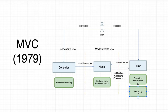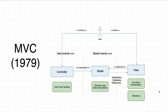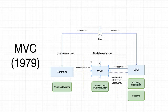MVC was a design pattern to solve the user interaction with the user interface problem. The advice at the time was that every view on screen would have a specific controller and a specific model — so a button on screen would have a button controller, a checkbox would have a checkbox controller. The entire user interface was a collection of model, view and controllers.